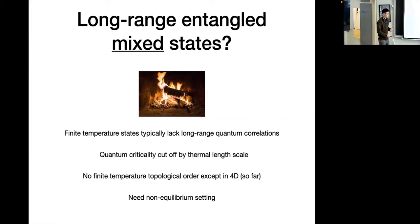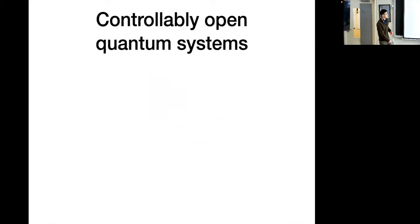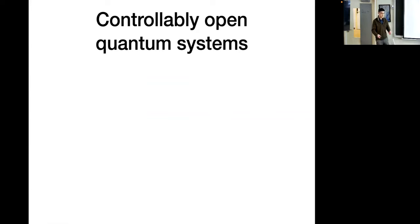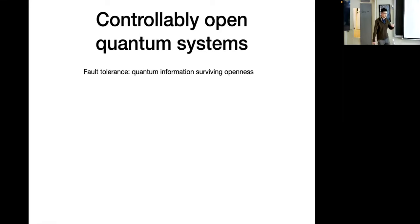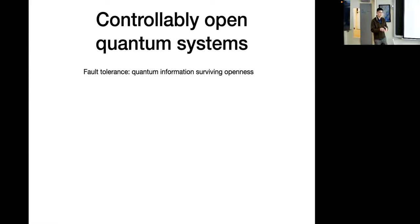It's clear that we need some highly non-equilibrium setting to get any non-trivial mixed states. We want to consider a setting of highly controllable open quantum systems — quantum systems in which the coupling to the environment doesn't lead to trivial thermalization, but where you can control the interface with the environment very carefully. As usual, we can draw inspiration from quantum error correction and fault tolerance, where for decades they've been considering the closely related problem of how to stabilize quantum information coherently in a noisy environment. This is basically hand-in-hand with stabilizing long-range entanglement in an open quantum system.